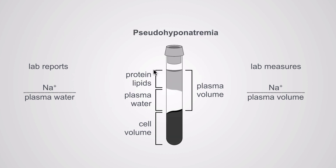But if you have an unexpectedly high insoluble fraction — unexpectedly high proteins or lipids in the blood — all of a sudden your plasma water is much smaller than your plasma volume. When they measure sodium over plasma volume, it wildly underestimates the true sodium concentration because the denominator is so much higher than reality.